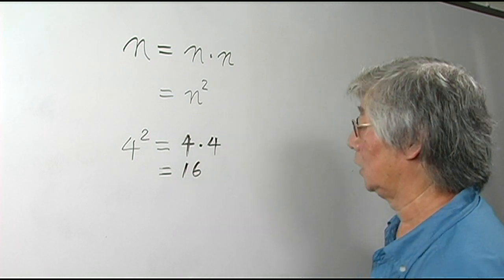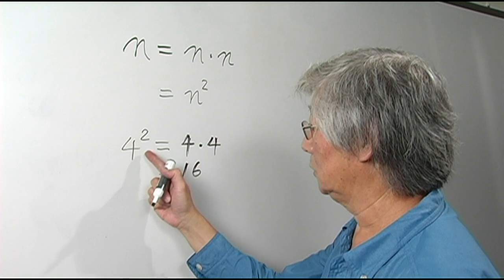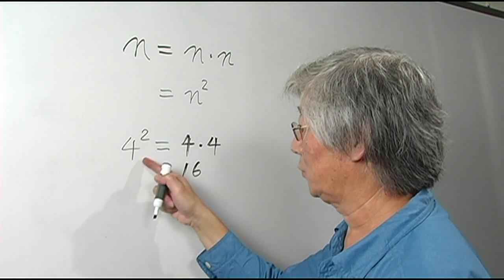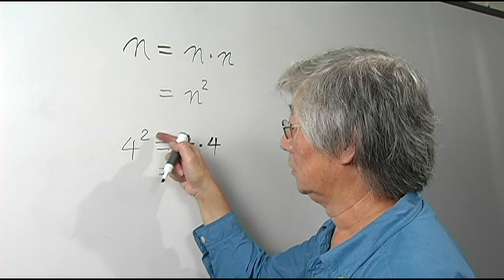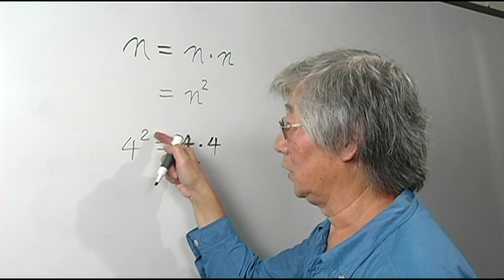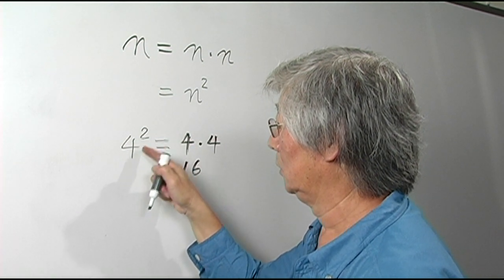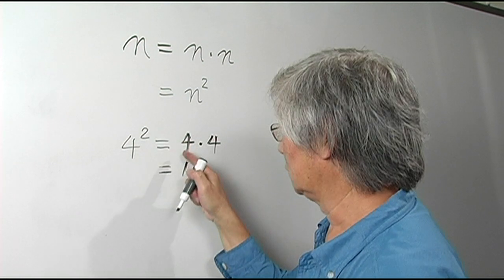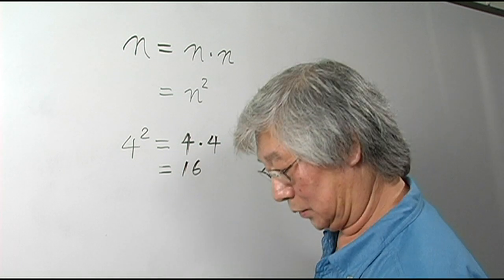Now another way to describe the exponential expression is you say you take the base and you raise it to the power of the exponent. So I'm raising 4 by 2. That means you multiply it by itself twice and the answer is 16.